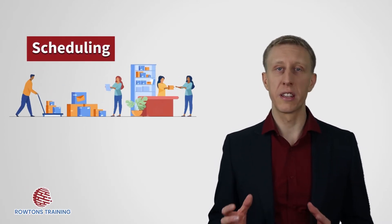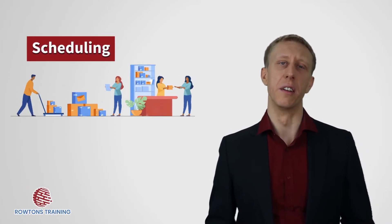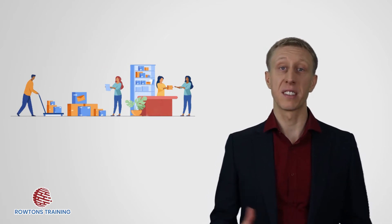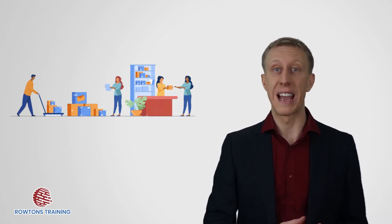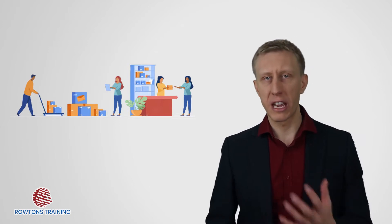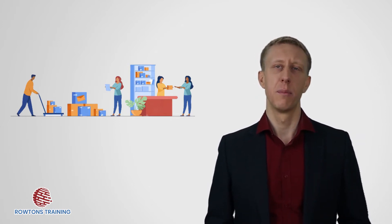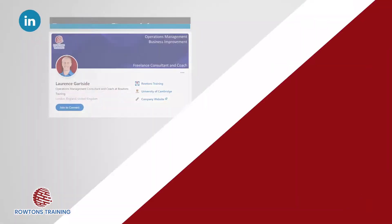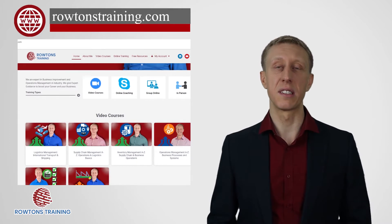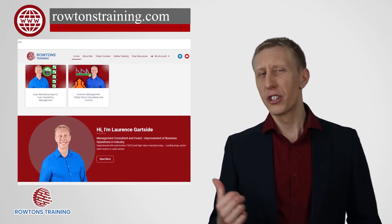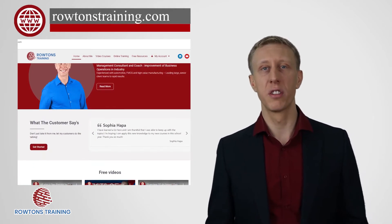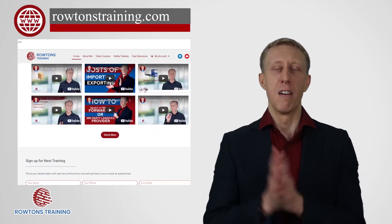Scheduling is about choosing the order that jobs get done. Specifically, that's the sequence that resources get allocated to the creation or delivery of a product or service. But how do we choose and how is it so different in different types of operations? Hi there, I'm Lawrence Gartside, Management Trainer and Consultant in Business Operations Management. Check out my courses over at rowtonstraining.com. Back to the scheduling.